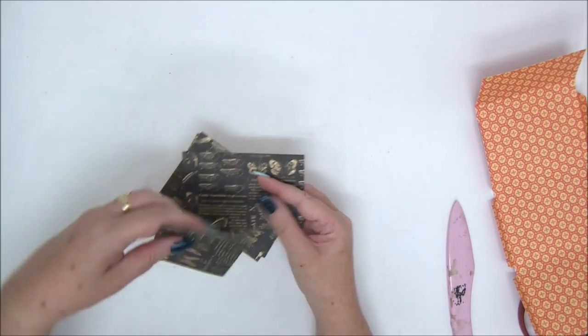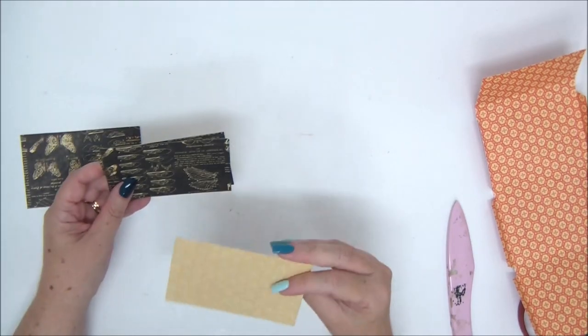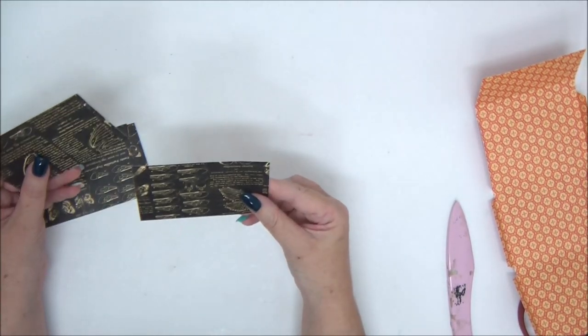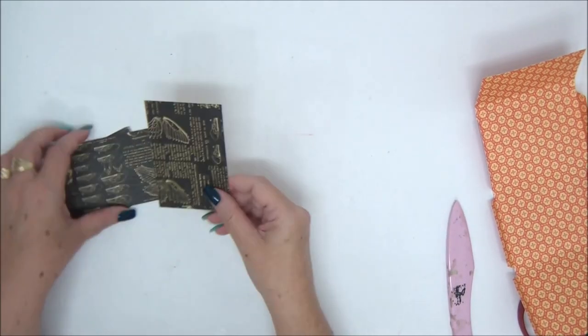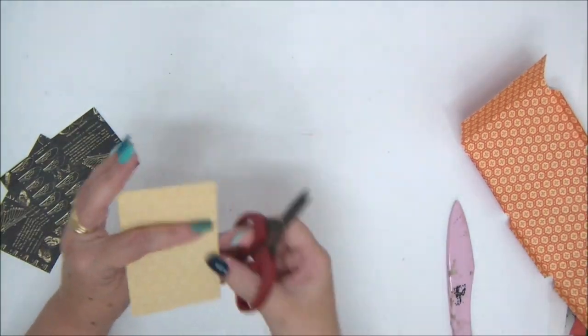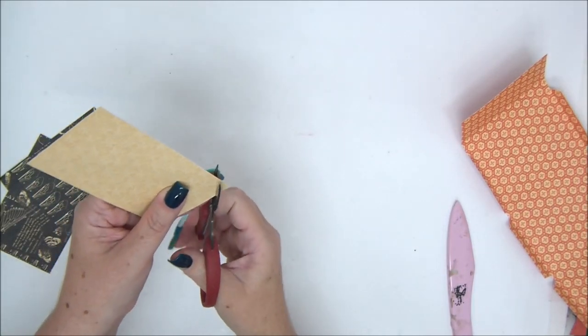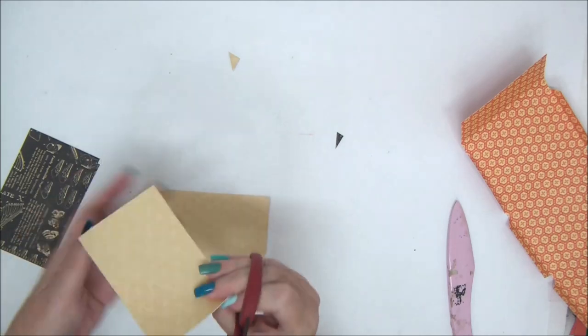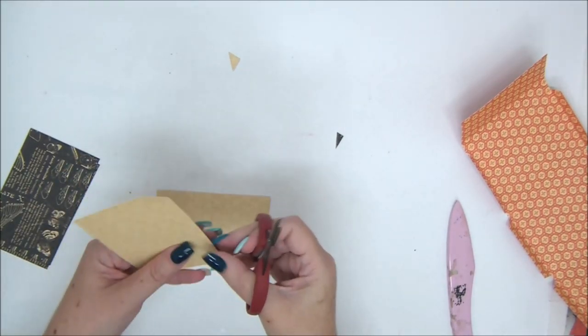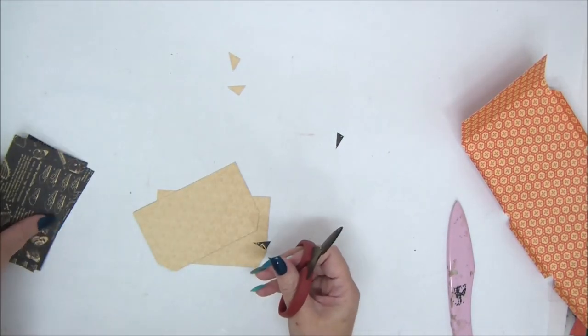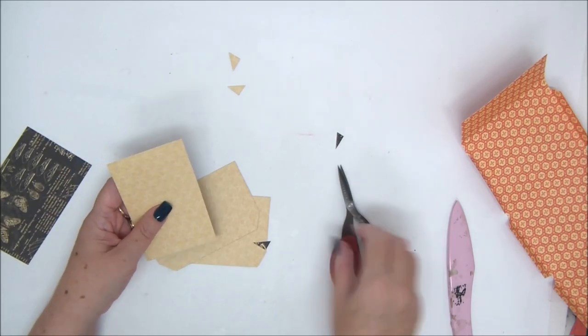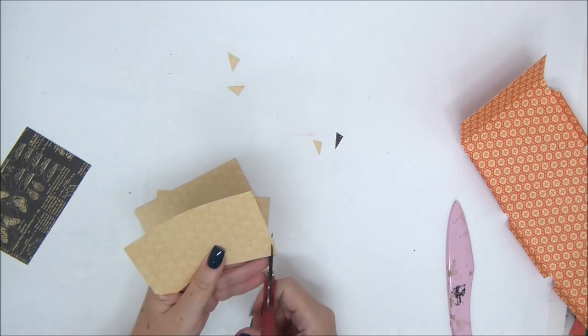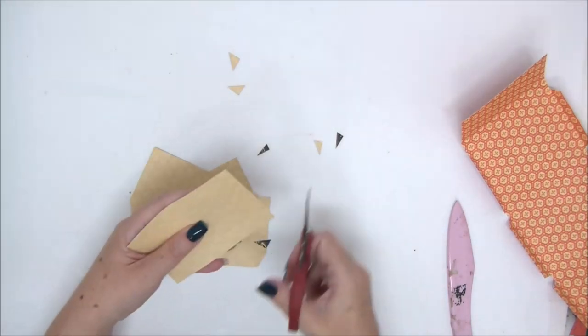One of the sides of my pattern paper has writing on it, so I want to make sure that it's not upside down. Now we're going to cut the corners from the score line to the edge on all four pieces, and we will be ready to assemble our envelope.